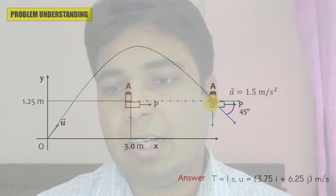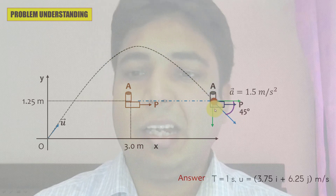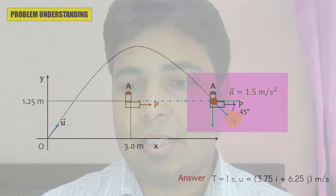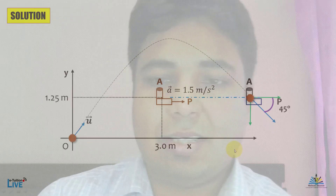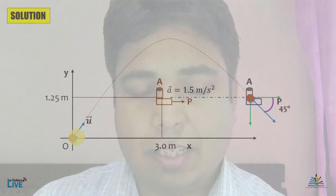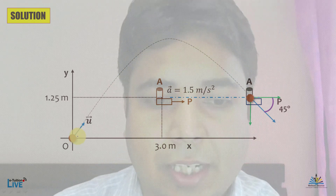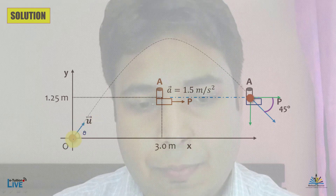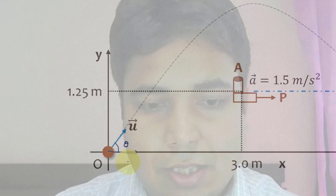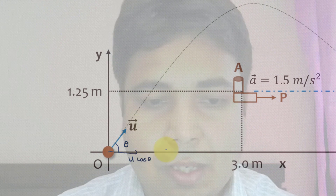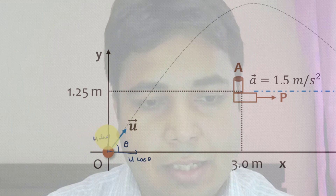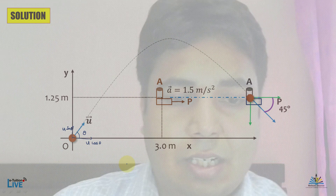At time t, the projectile hits the plank at an angle of 45 degrees with the positive x-axis during downward motion. So let's work through the solution. Let u be the initial velocity of the projectile at angle theta. The x-component is u·cos θ and the y-component is u·sin θ. These are the initial velocity components.